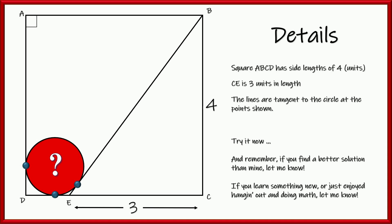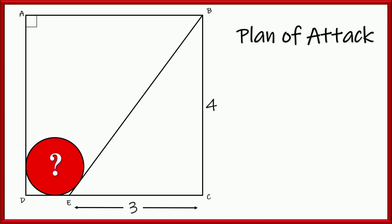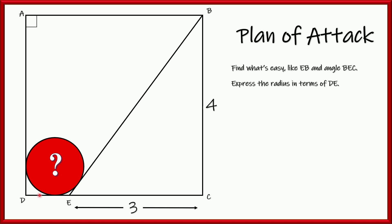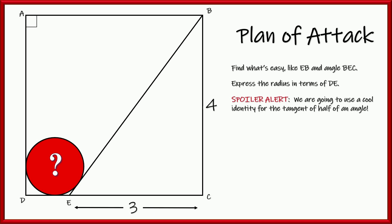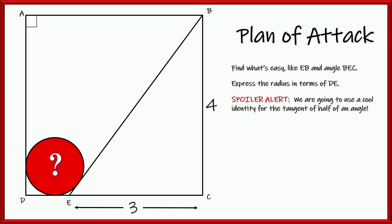Here's my plan of attack. I'm going to find the easy stuff like the side BE and the angle BEC. Then I'm going to try to express the radius of the circle in terms of DE, which is a length of one. What's going to end up happening is we're going to use a pretty cool identity for the tangent of half of an angle. It might be something new for you — it was new for me.